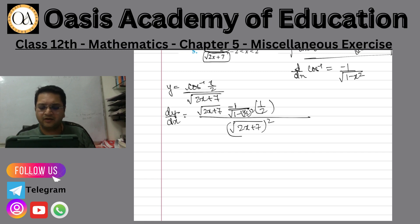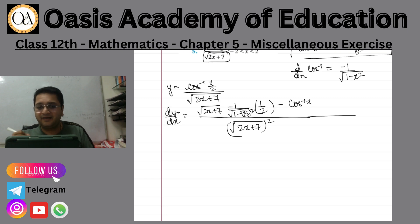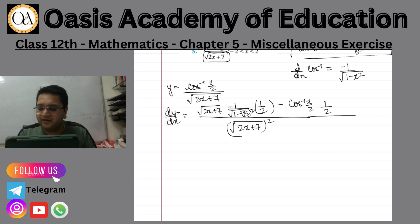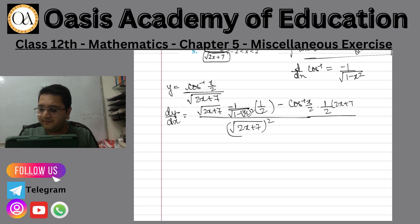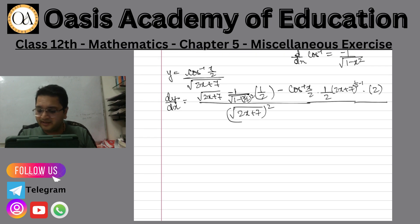The differentiation of x by 2 is 1 by 2. Then with a minus sign, I keep our numerator cos inverse x by 2 constant and differentiate the denominator. The denominator is 2x plus 7 to the power 1 by 2, so differentiation gives 1 by 2 into 2x plus 7 to the power minus 1 by 2, and the differentiation of 2x plus 7 is 2, since 7 differentiates to 0. So the 2 will cancel.